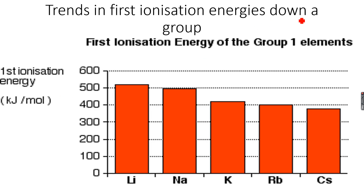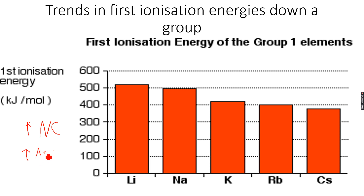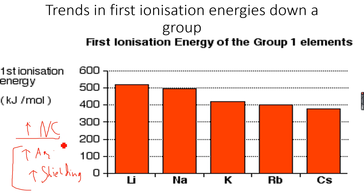Now, trends in first ionization energy going down a group. As we go down group 1, you can see that the first ionization energy is decreasing. The first ionization energy is decreasing because as we go down the group, nuclear charge increases — which would suggest ionization energy should increase — but simultaneously, atomic radius increases and the shielding increases because there is one more full electron shell. The increased shielding and increased atomic radius outweigh the increased nuclear charge.